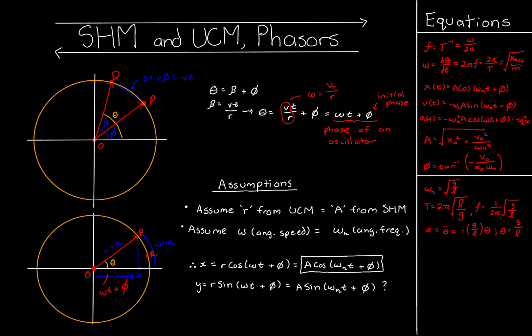We also have y equals R*sin(omega*t plus phi), which is the y-projection and predicts how a vertical system would move. However, this isn't what we use for our SHM equations, because the sine projection is pi/2 out of phase with the x-displacement. Using the identity sin(theta) equals cos(pi/2 minus theta), we get A*sin(omega_n*t plus phi) equals A*cos(omega_n*t plus phi minus pi/2). For simple harmonic motion, we always model our equations using the x-displacement.